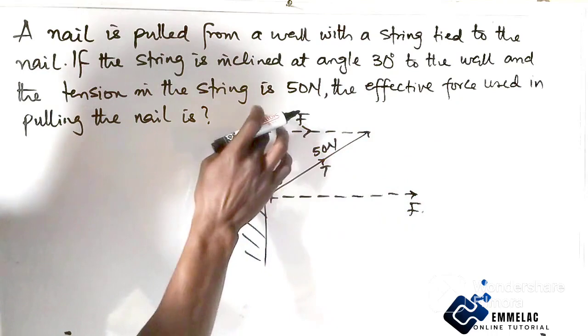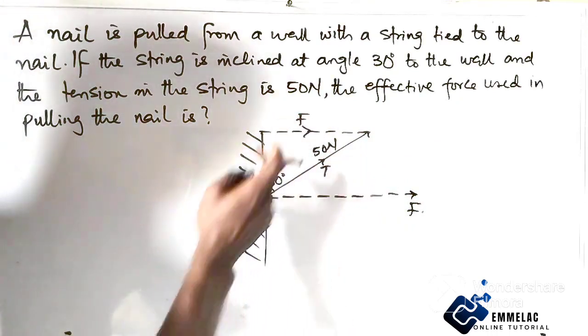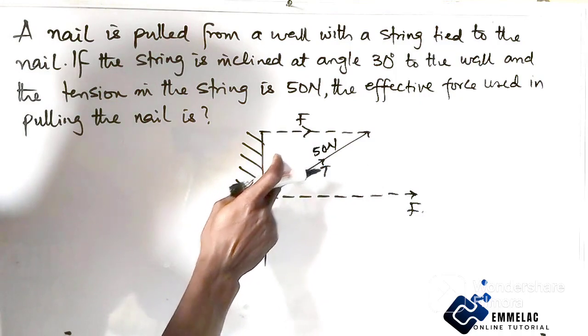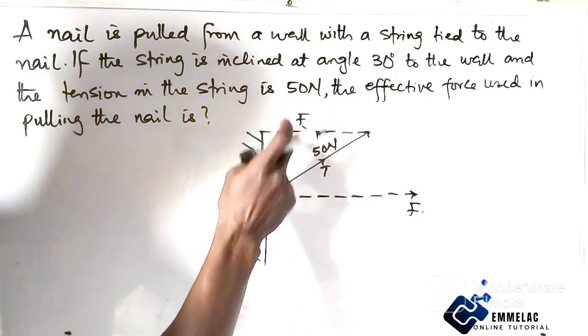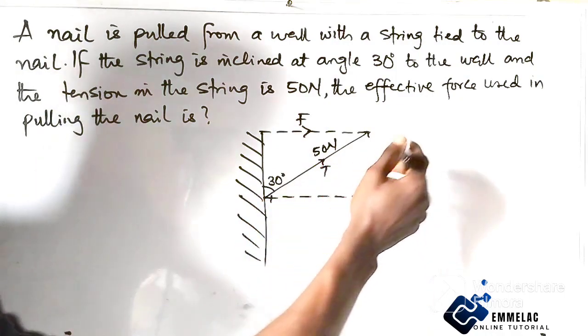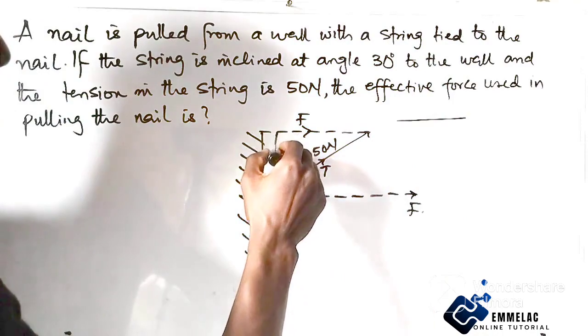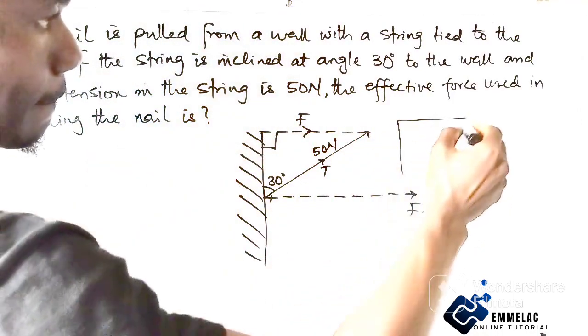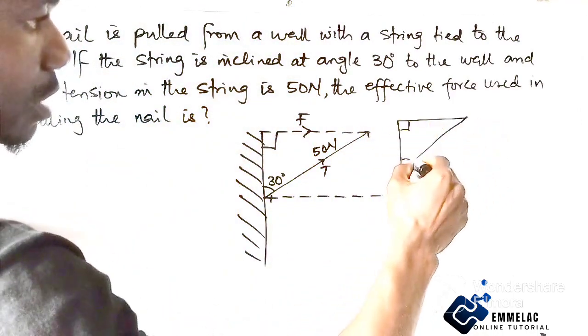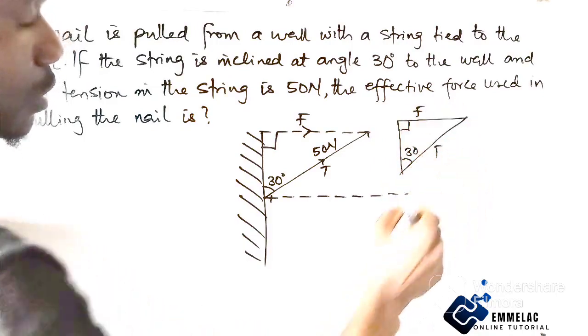Now connecting all, you can see that this line is opposite to this angle, and we have this. If we resolve this, this is 90 degrees. This is the 30, the force and the tension. With this, we can now say this is opposite and this is hypotenuse.